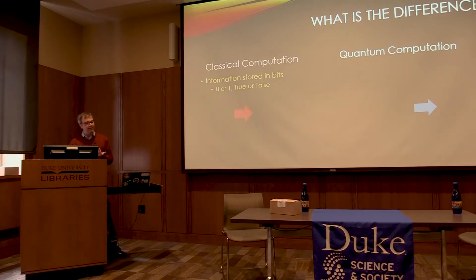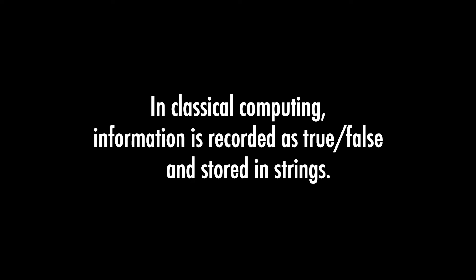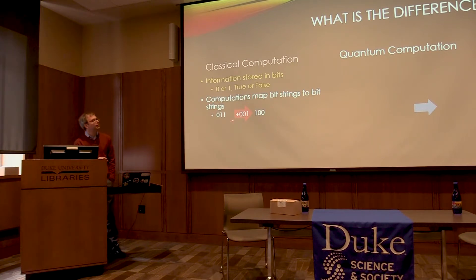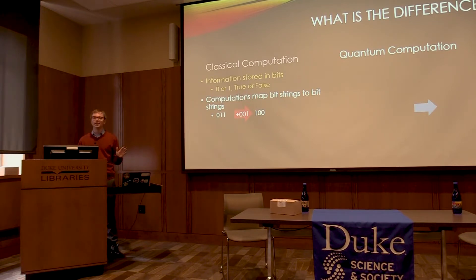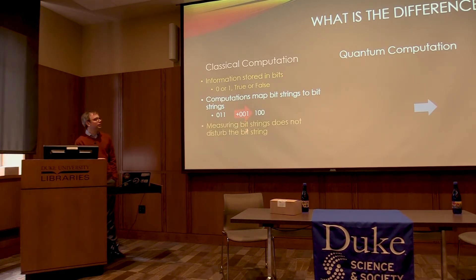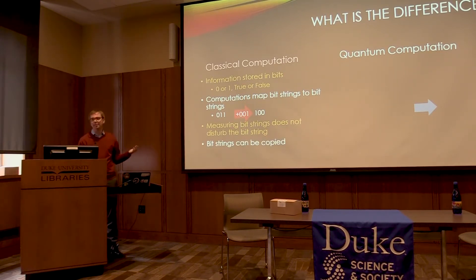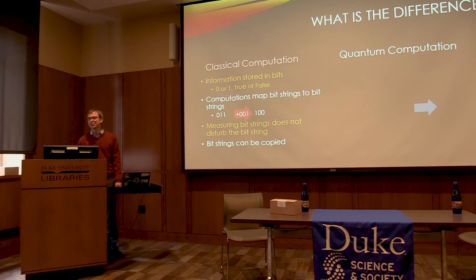So, classical computation — the key thing is it's just basically a bunch of answers to yes or no questions. You have the bit storing a zero or one; things are true or false. If I do a computation, I have a bit string and I'm adding one — I map a bit string to a bit string. So everything you do in your computer, whether you're on YouTube, social media, working on your MATLAB, or writing your essay, all it's doing is mapping zeros and ones to zeros and ones. That's all it does at a fundamental level. If we measure these strings of zeros and ones, nothing happens — you get to keep that string and use it later. And most importantly, we can copy it, so you should always back up your data.